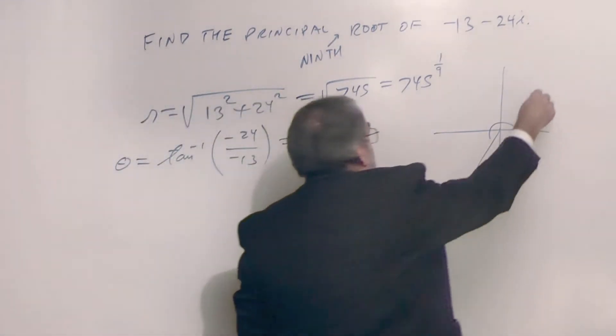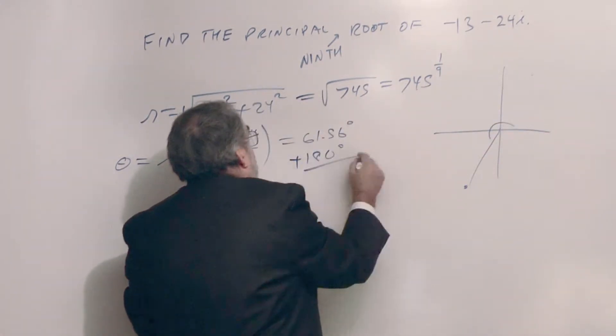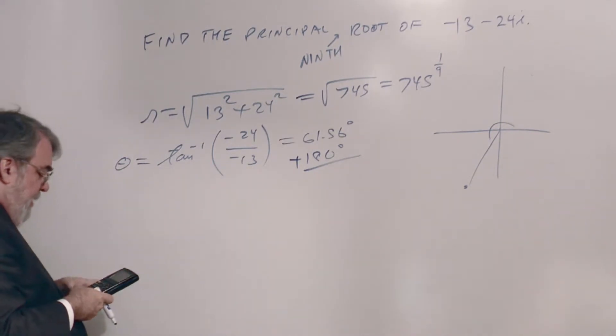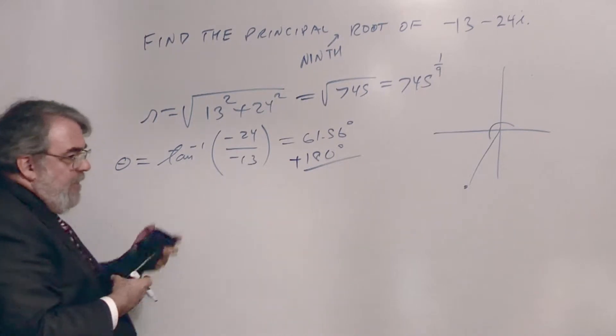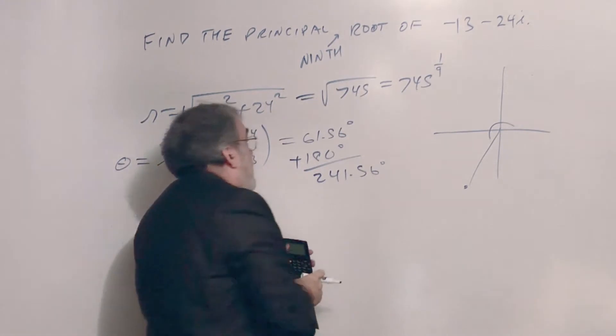Because 61 degrees is up here, so I have to add 180. In this case I have to add 180 to get down to that third quadrant. So plus 180. Now I'm going to store this on my calculator as x, so I've got all the decimal places. It's 241.56 degrees, okay.